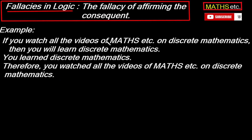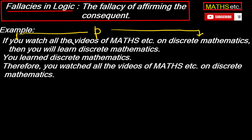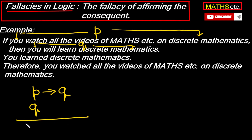To understand this more clearly, let's write the argument form. Suppose P denotes the statement 'you watch all the videos of Maths.etc on discrete mathematics,' and Q denotes the statement 'you will learn discrete mathematics.' So the first premise in symbolic form becomes P implies Q. The second premise is Q (you learned discrete mathematics). Therefore the conclusion is P. So premise 1 is P→Q, premise 2 is Q, and the conclusion is P.